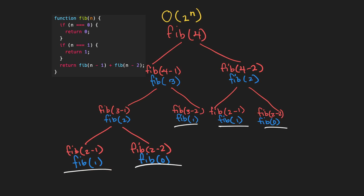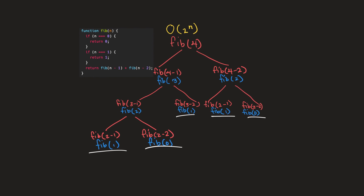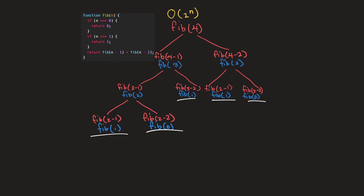And now these two have reached our base cases as well. So now we'll get into the reason why this recursive Fibonacci function is an exponential function. Let's start by observing this recursive tree structure. As we can see, we have one, two, and three levels to this recursive tree structure.